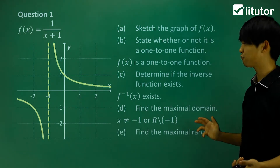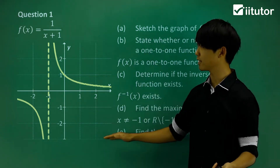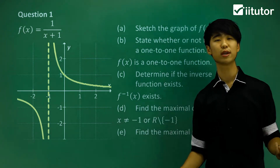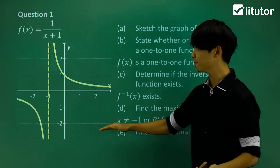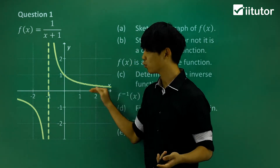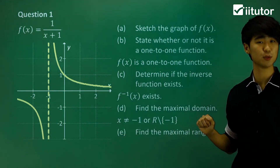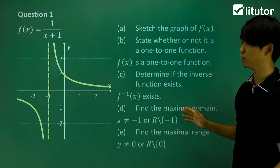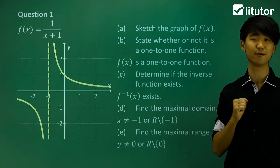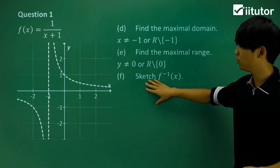Now let's find the maximal range for this function — what y values can it give? Looking at the graph, we have many y values, but at y = 0 we're never going to have a value there. So for my maximal range, y cannot equal 0 — every y value except that one. I'll leave those two answers up while we move on to part f.